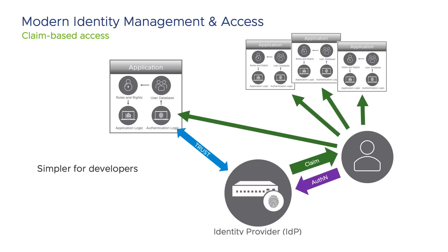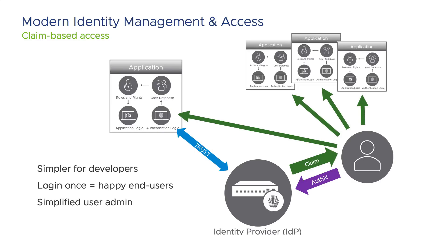Claim-based access is much simpler for the developers because they do not have to create a strong authentication method, nor do they have to protect the user's passwords. If a change in authentication method is needed, you change it on the identity provider and the application remains unmodified. Users are super happy — they can be authenticated once into the identity provider and with that gain seamless access to all their applications. Administrators are also happy. If a user leaves the company, the administrator can disable the user in the identity provider and immediately access to all applications has been revoked.